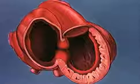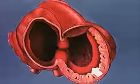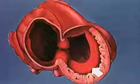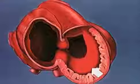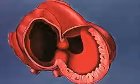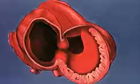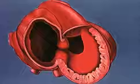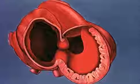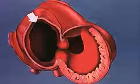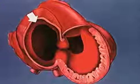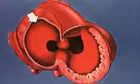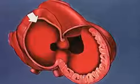From the interventricular ridge, a proliferating muscular septum advances across the common ventricle toward the base of the heart. Simultaneously, the interatrial septum rapidly grows toward the endocardial cushions, progressively constricting the foramen between the atrial chambers, the foramen primum.